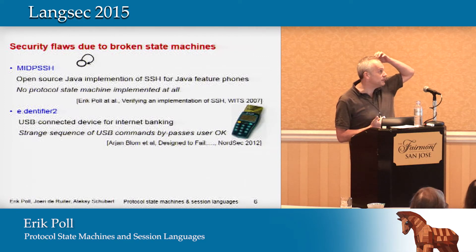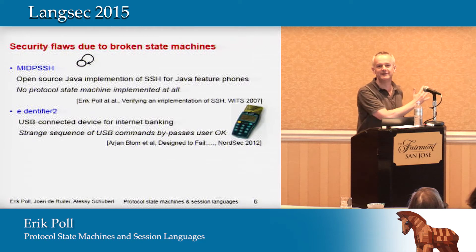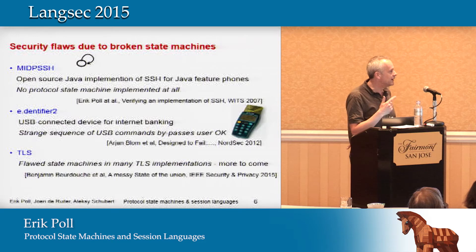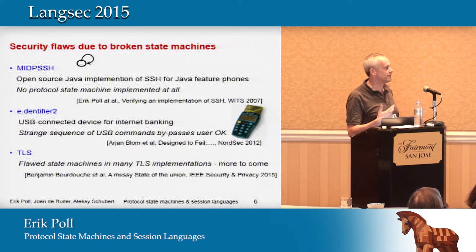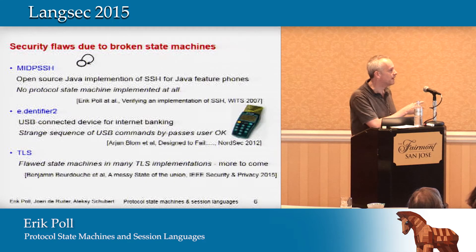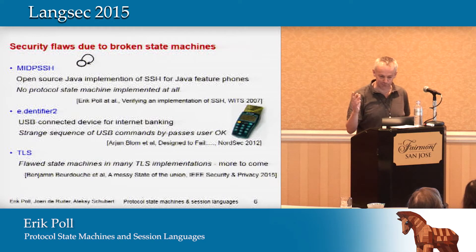We started looking at banking products about 10 years ago. My naive expectation was that of course these people have looked at security — but I guess somebody did a review while mostly asleep. Earlier this week there was a presentation by researchers from INRIA on TLS, and they found a lot of messy state machines in TLS implementations, including the FREAK attack. We also did a bunch of experiments with TLS and found lots more bugs.